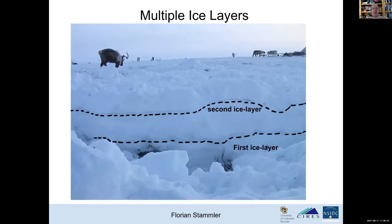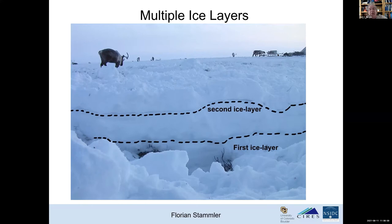Here's an example showing two different ice layers formed from two different rain-on-snow events, from the Yamal Peninsula. At the bottom you can see tundra vegetation, then a first ice layer from one rain-on-snow event, a second ice layer on top of that, and some reindeer on top. You can have icy layers on the surface, and with that second ice layer, for example, it formed from a rain-on-snow event and then more snow fell on top.